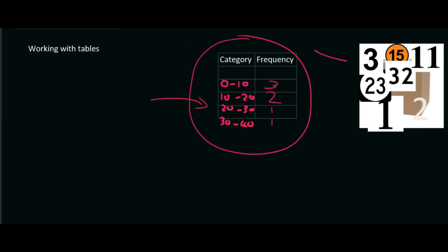So in a test, they're not going to give you the box with all the numbers. They're going to give you the table. So you need to understand what this means. It means that in the category of 0 to 10, there were three numbers. Now those numbers could be 3, 5, and 8.